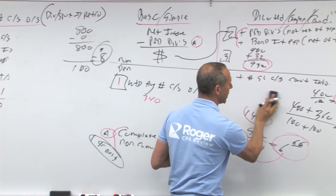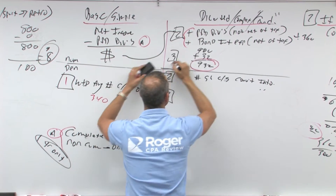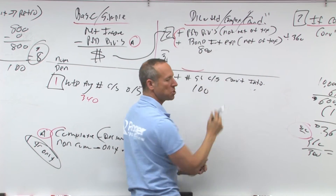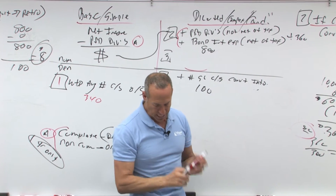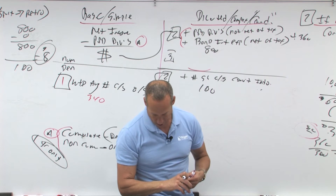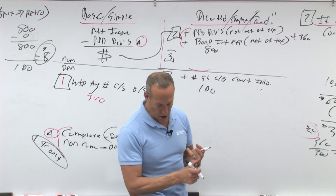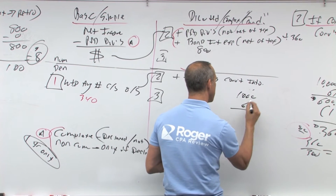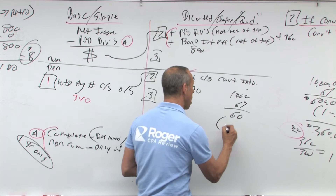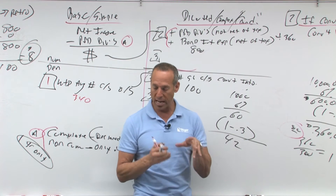Now let's adjust for the bond conversion. We bring the $800 and 100 shares over as our starting point. We need to adjust the bond interest expense net of tax. The bonds are 6% on a $1,000 face value, and our effective tax rate is 30%. So $1,000 at 6% is $60. If we convert, I don't have to pay $60 of interest. But with that $60 saved, the government takes 30% — so 1 minus 0.3 is 70%, times $60: 6 times 7 is 42. So you're left with $42 net-of-tax interest expense savings.